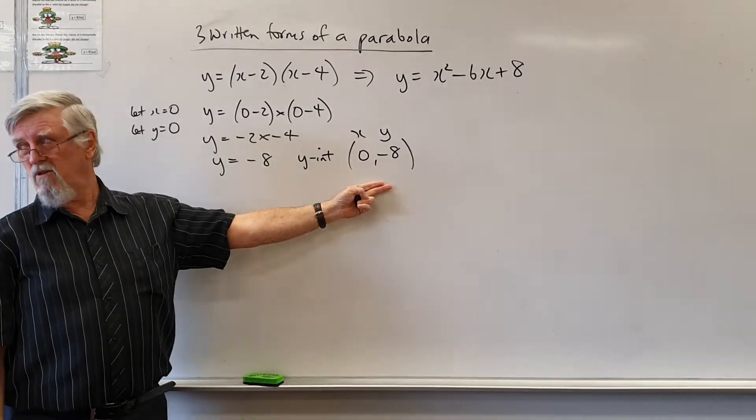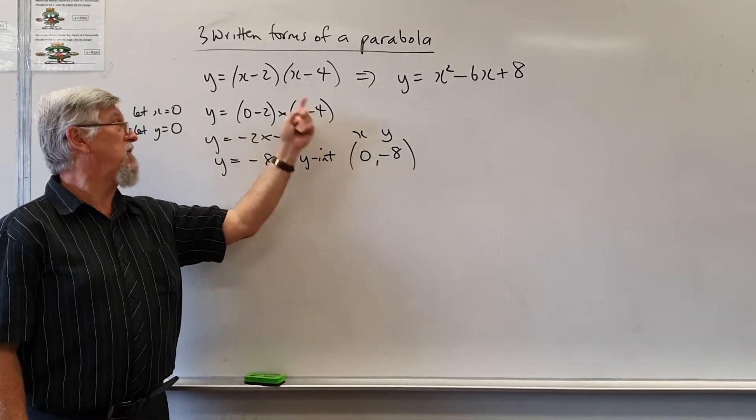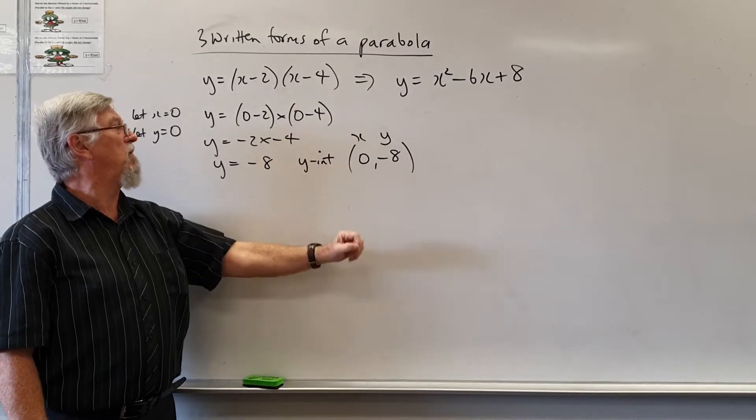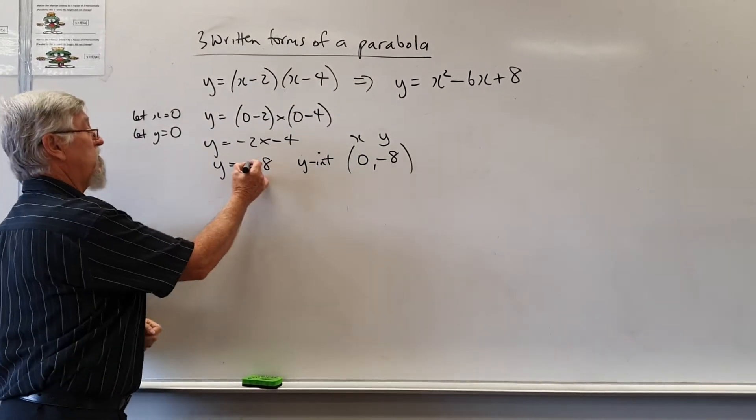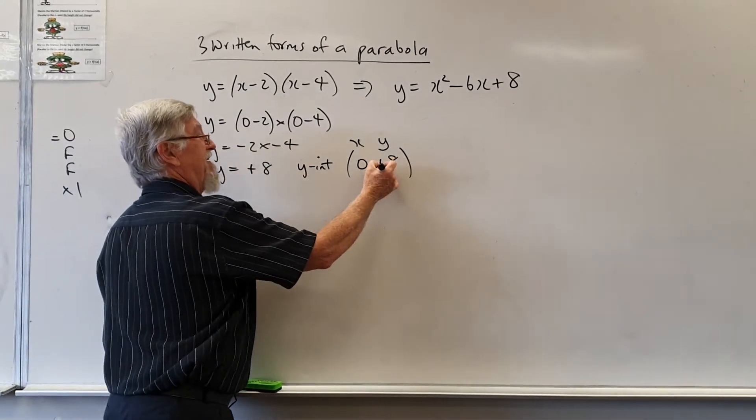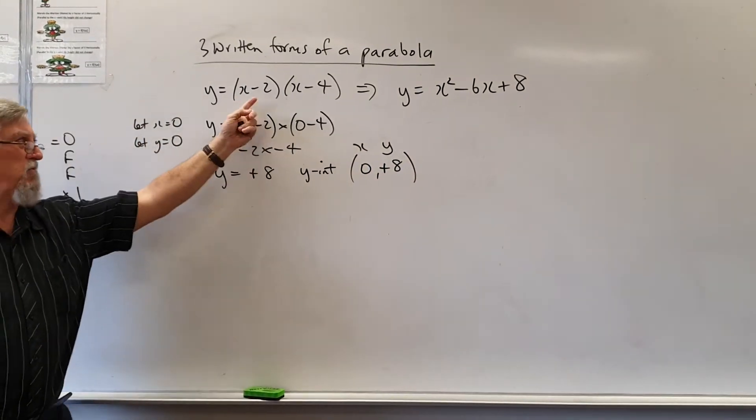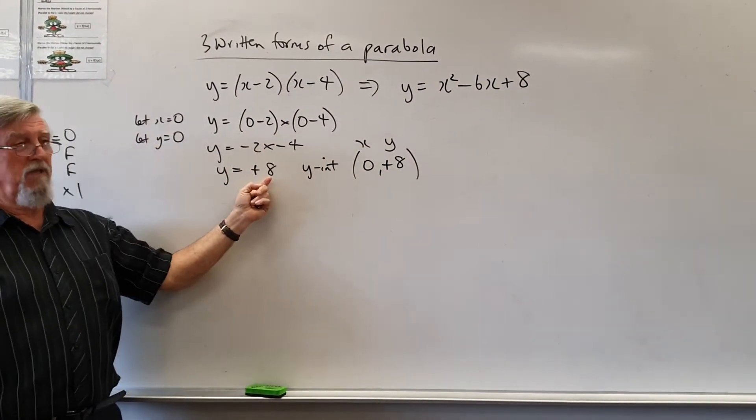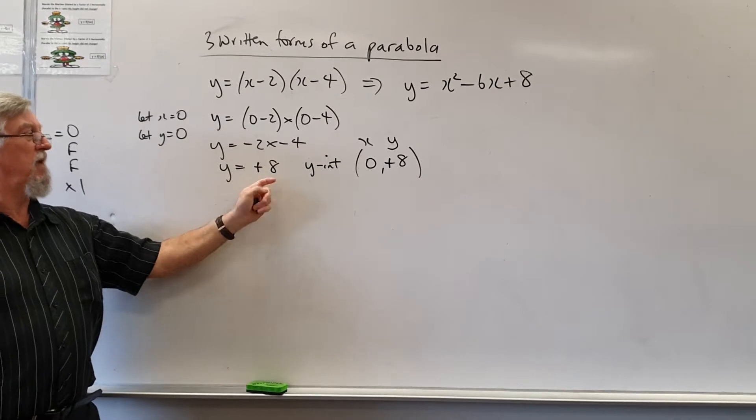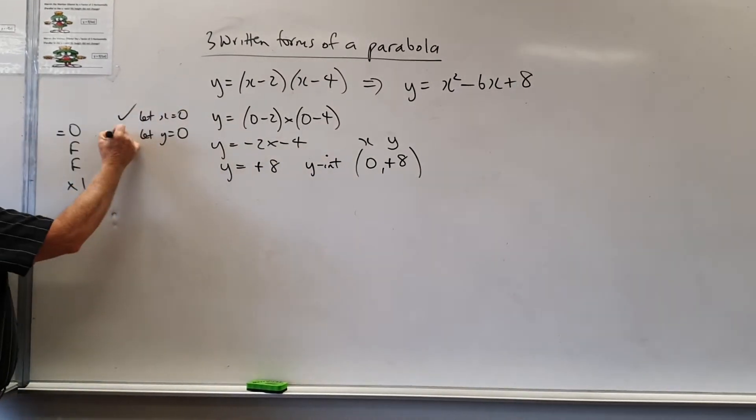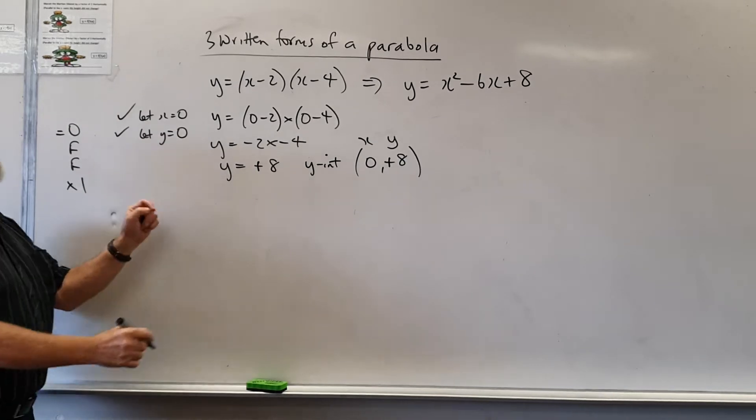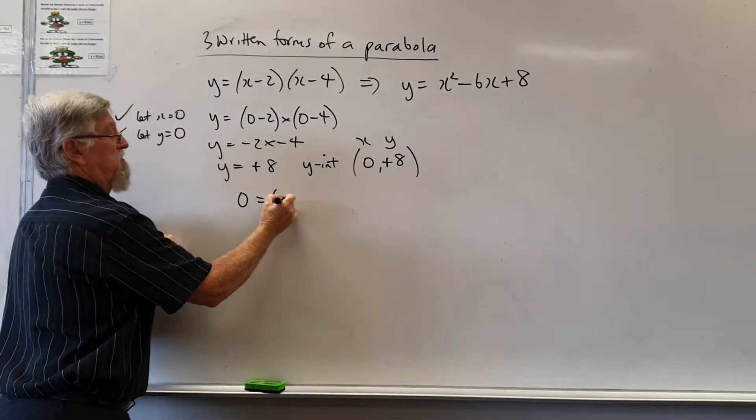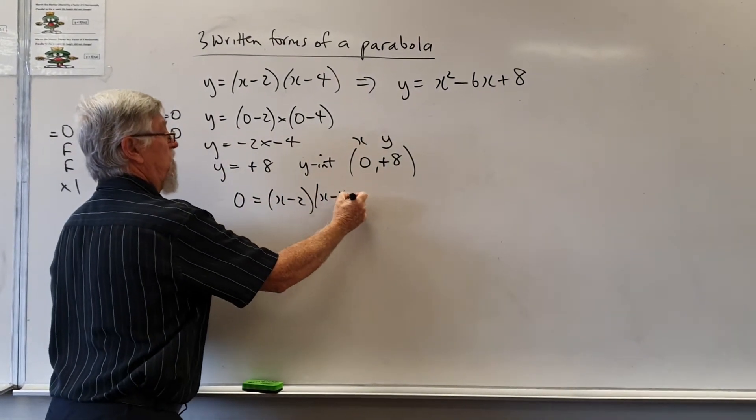Shortcut for those who realize once you're comfortable is you can just go minus 2 by minus 4. So what can we do next? We've done that one now we're back to let y equal 0. So if we let y equal 0 we've got 0 equal x minus 2 x minus 4.